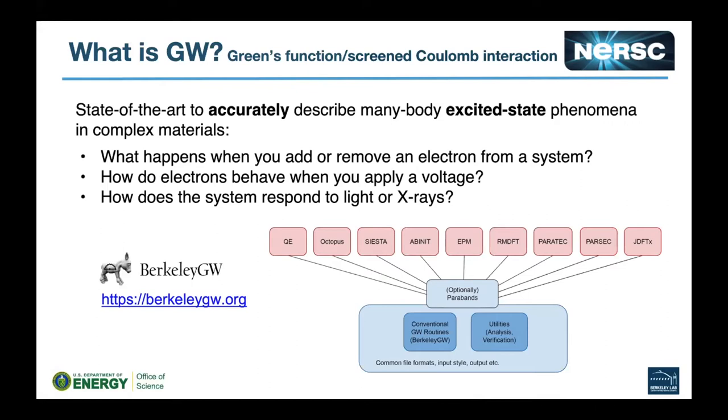So what is GW? G stands for Green's function, W for screened Coulomb interaction. GW calculations usually sit on top of other chemistry or material science codes like Quantum ESPRESSO or Abinit. These applications calculate ground state properties, and then the results get fed into GW codes like Berkeley GW, which refines those results to get more accurate estimations in terms of self-energy or other properties.